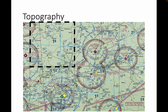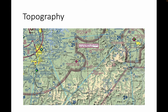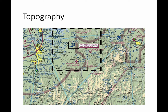Looking at this chart section, each quadrant will have a maximum elevation figure. We have 1,900 feet MSL in one quadrant, 2,100 feet MSL in another, and so forth. Depending on where you are in the country, there may or may not be much topography shown because some areas are flatter than others. Here's a section down in Arkansas showing some elevation profiles — the colors give you a clue about the relief. The maximum elevation in this particular quadrant is 2,500 feet MSL.